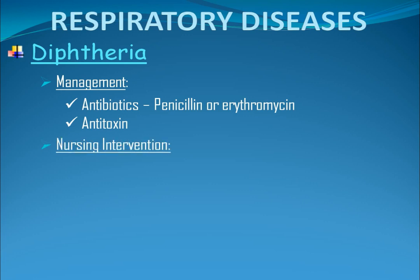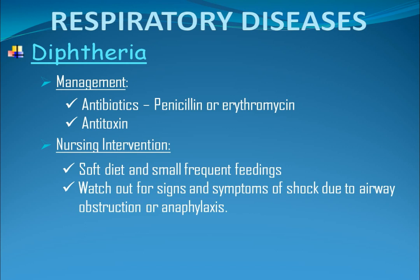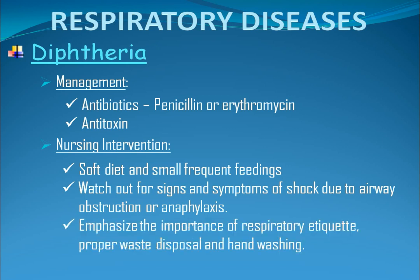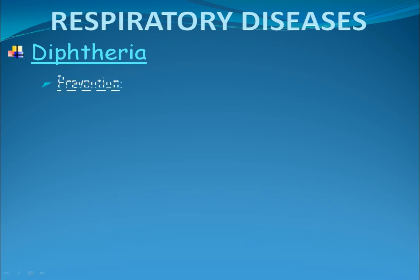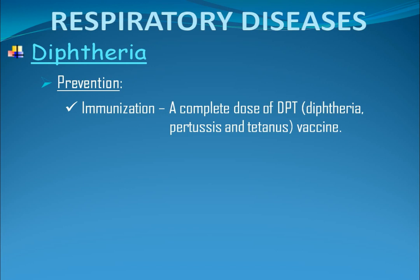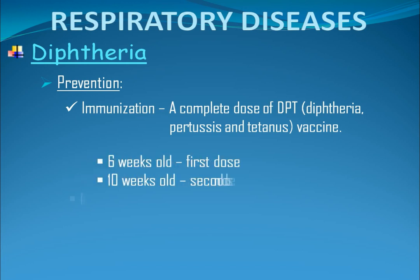Nursing interventions: Encourage soft diet and small frequent feedings. Watch out for signs and symptoms of shock due to airway obstruction or anaphylaxis. Emphasize the importance of respiratory etiquette, proper waste disposal, and hand washing. Prevention — Immunization: A complete dose of DPT, or the diphtheria, pertussis, and tetanus vaccine. This vaccine should be given for 3 doses: to infants at 6 weeks old for the first dose, 10 weeks old for the second dose, and 14 weeks old for the third dose.